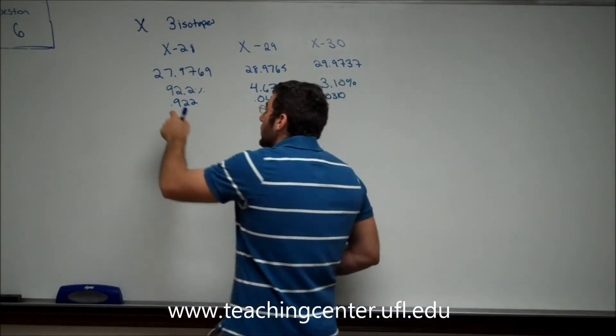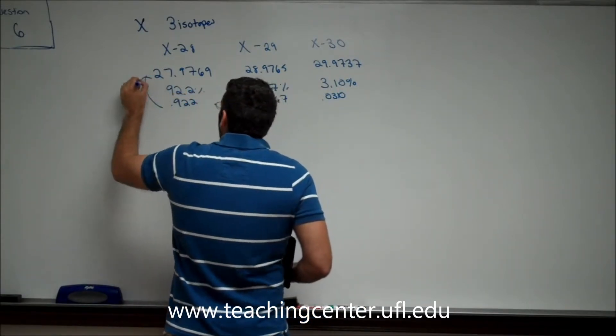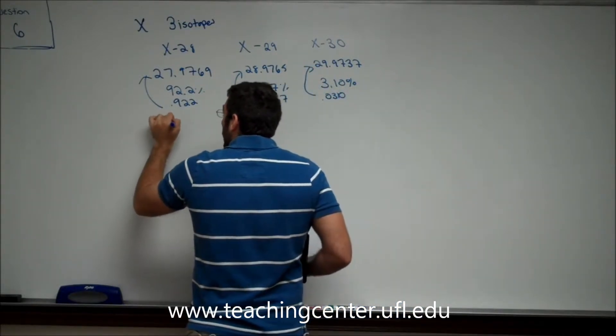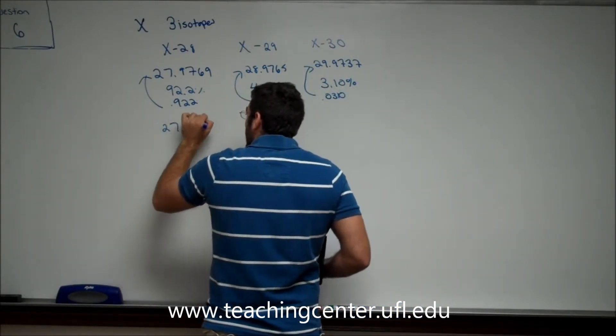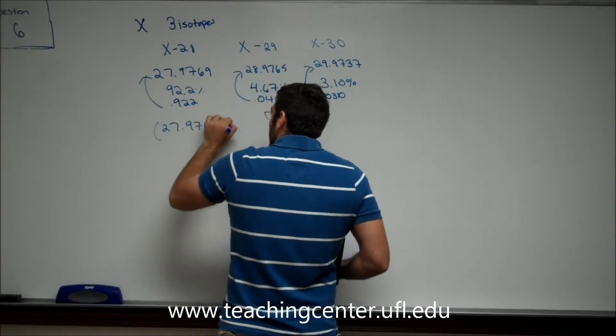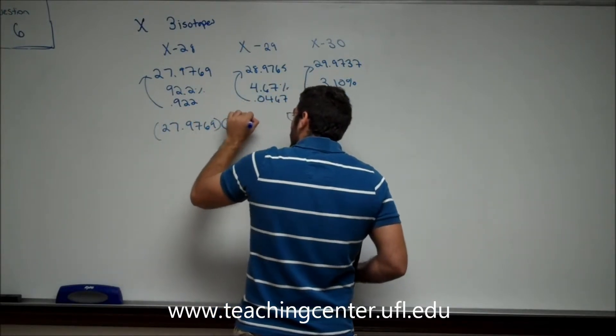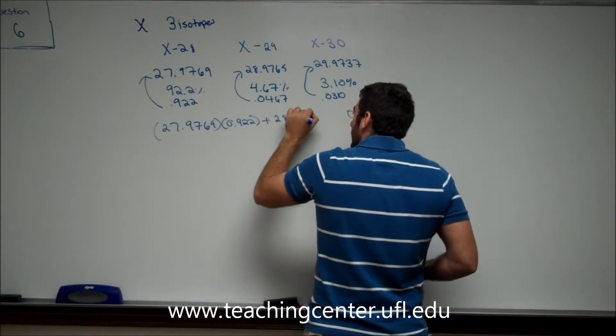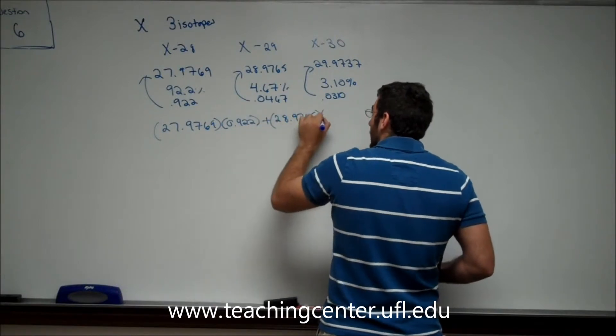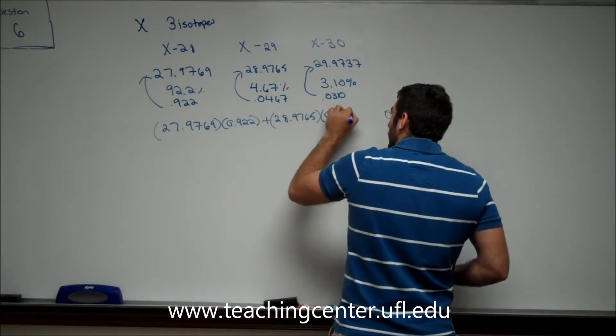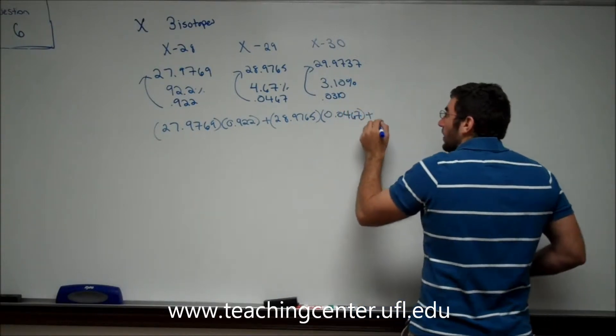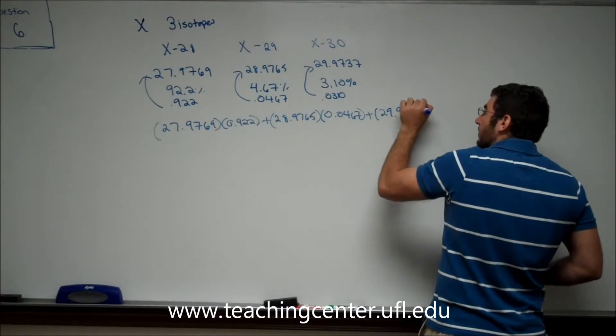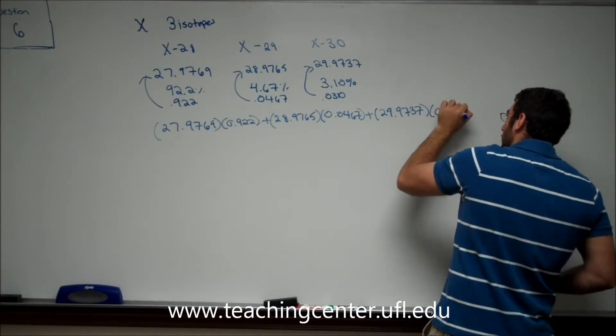Once we do that, we can multiply them by their atomic mass units. So we do 27.9769 times 0.922 plus 28.9765 times 0.0467 plus 29.9737 times 0.0310.